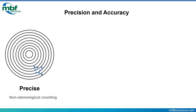Let's talk about the difference between precision and accuracy. Here's an example using a target and throwing darts. If you had a method that was precise, you would always hit in the same location on that dartboard. In our cell counting example, we're very consistently counting either 8 or 12 cells depending on section orientation. But we're missing the target — we don't have any way to quantify how far from the true number we are. That is non-stereological counting: it may be precise, but it's not accurate, making it very hard to compare results with other researchers.